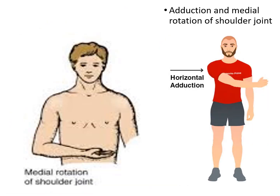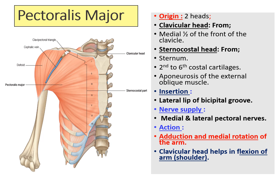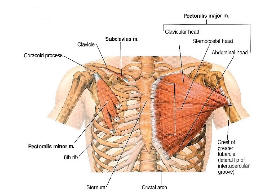Now we move on to the actions of pectoralis major. This muscle mainly helps in medial rotation, flexion, and adduction of the shoulder joint. We have now discussed all headings — origin, insertion, nerve supply, and action — giving a concise answer for a five-marker question.